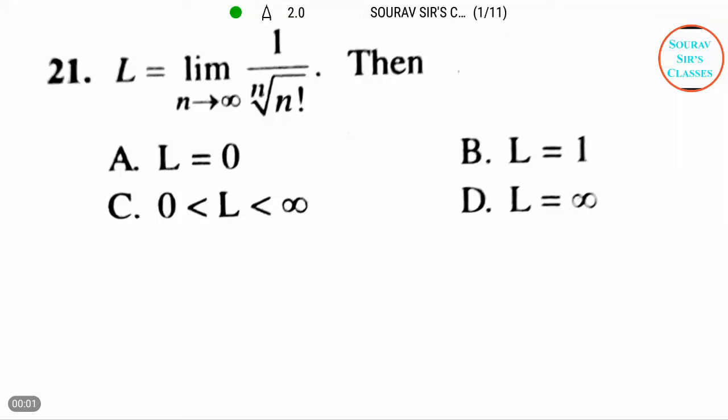Hello students, welcome to Saurav Sir's classes. Today we will be talking about this question. The question is about limit as n tends to infinity of 1 by n root over n factorial.